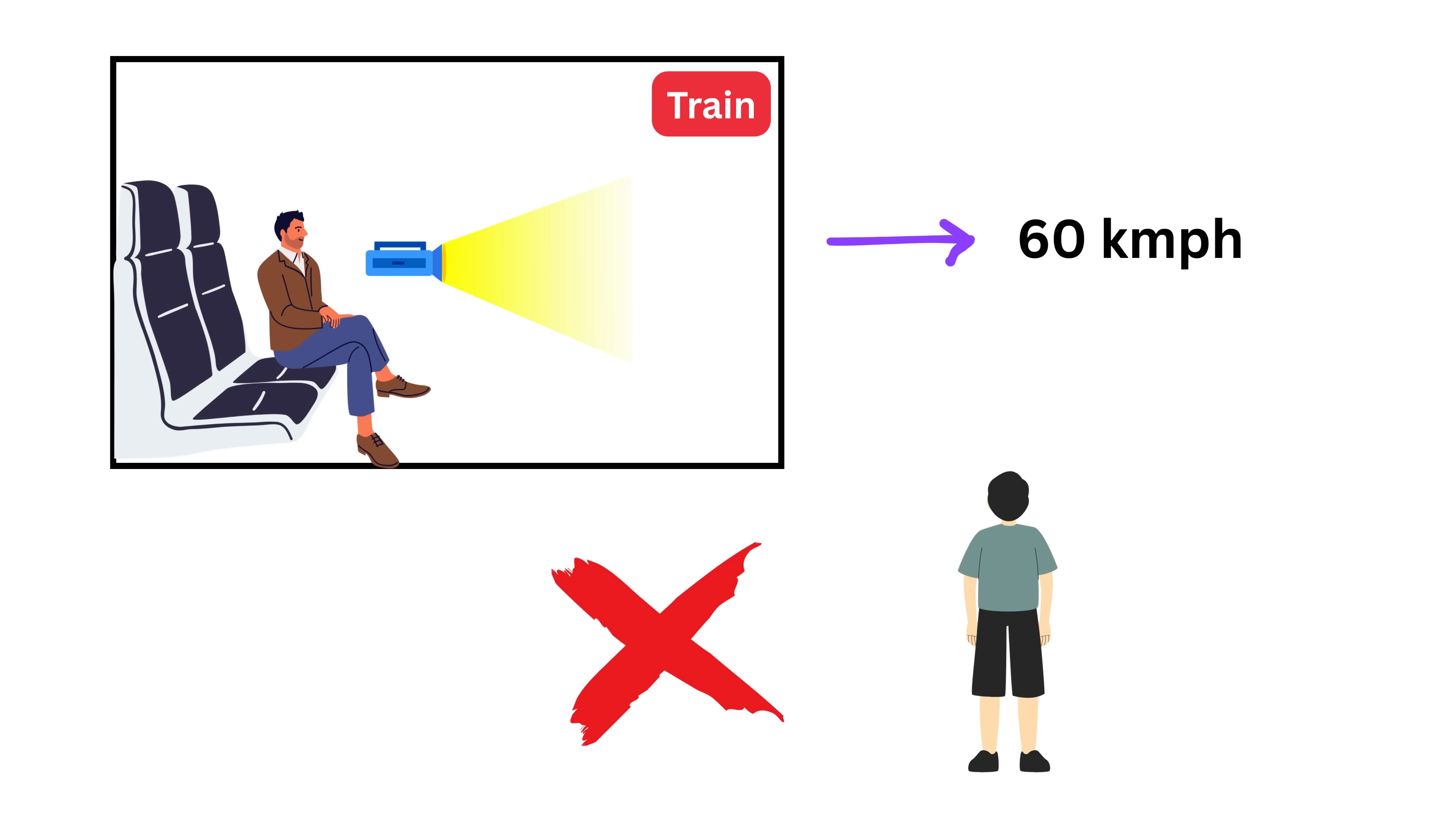So if I am sitting inside a train moving at say 60 kilometers per hour and I switch on a torch pointing forward, classical physics would say the light should move at the speed of light c plus 60 with respect to an observer standing on the ground. That's what we would expect by simply adding speeds like we did with the ball. But that is not what actually happens.